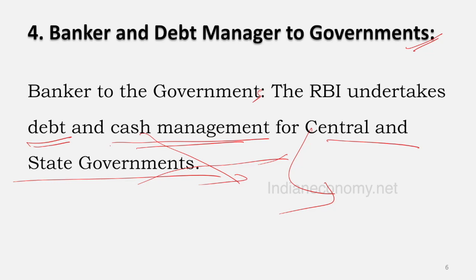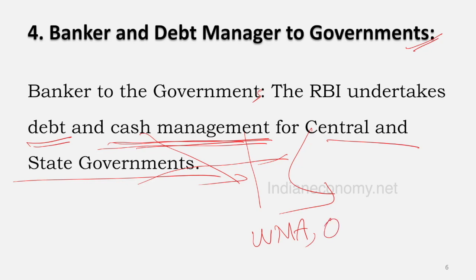RBI handles cash management for central and state governments — it keeps custody of their cash balances. Whenever the central or state governments need funds, RBI provides them in the form of facilities known as Ways and Means Advances and overdraft. Such facilities will be covered in a later module.